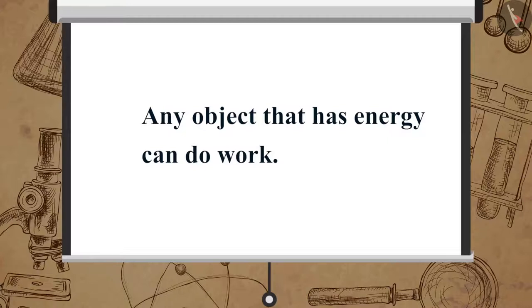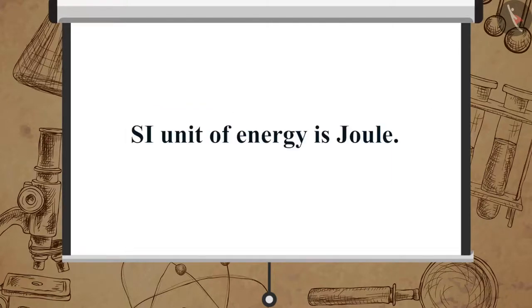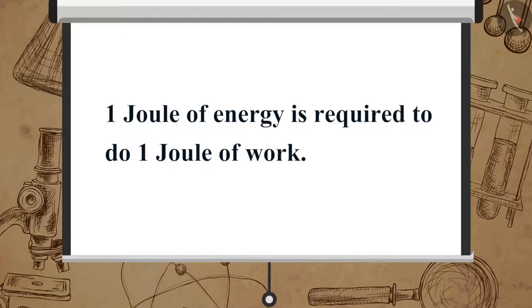Then after receiving the energy, the ball B possesses the capacity to do work. Therefore we can say that any object that has energy can do work. Since energy is measured in terms of the capacity to do work, the SI unit of energy is that of work, which is Joule. We can say one Joule of energy is required to do one Joule of work.